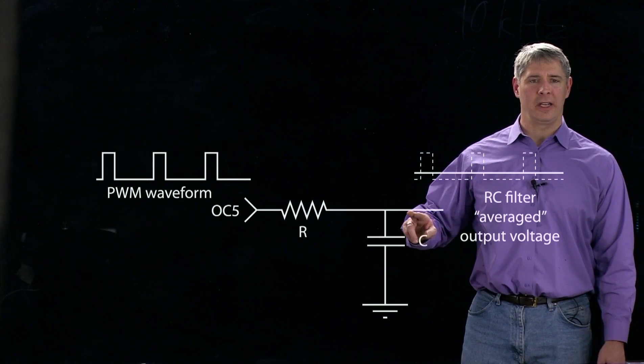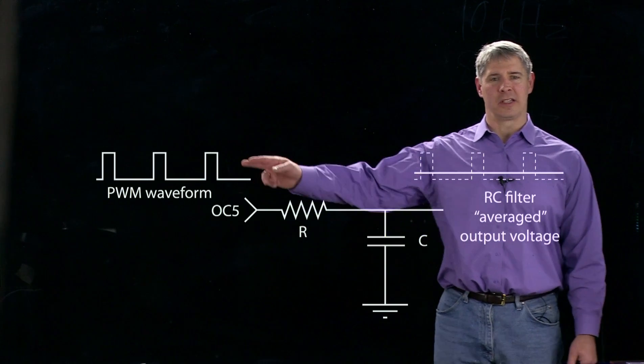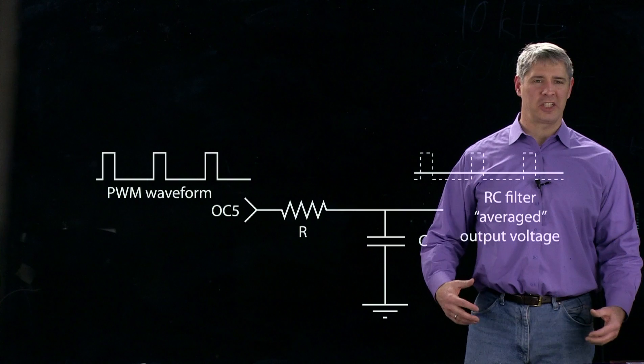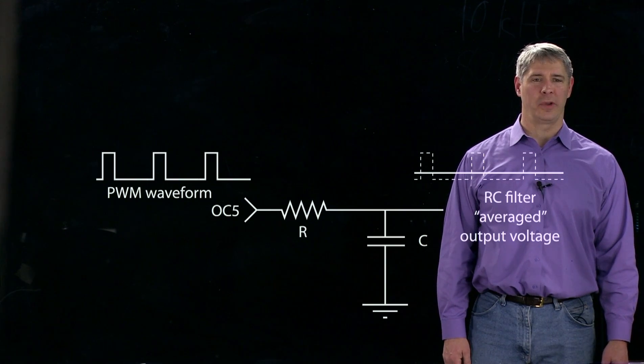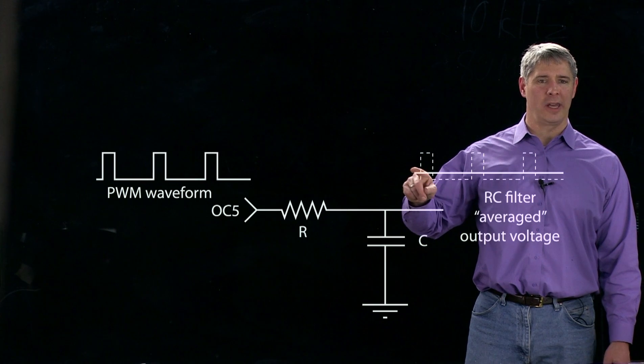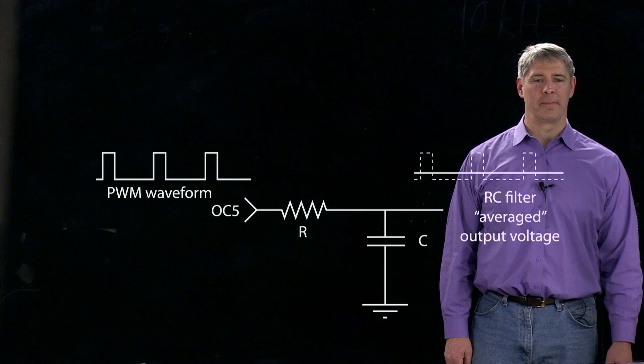And if we look at the voltage now here, then that voltage will be changing more slowly than it's changing here on the digital output. And in fact, if it's changing slowly enough, then we can actually make the output at this location look like the time average of the digital pulse train.